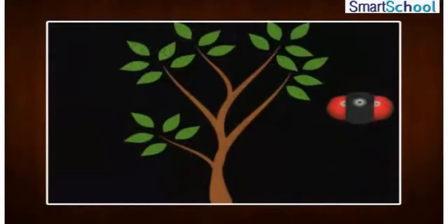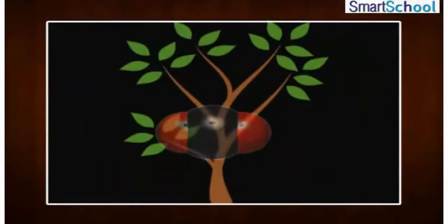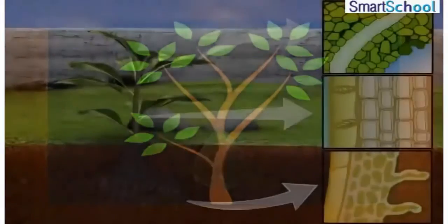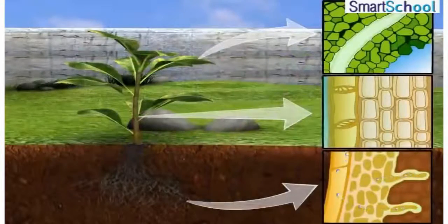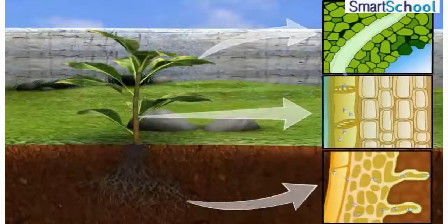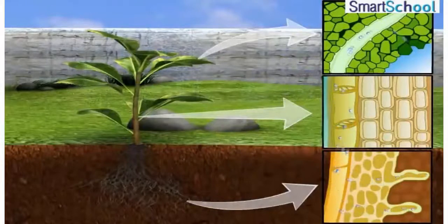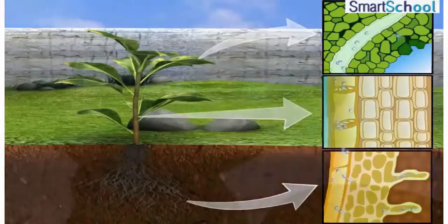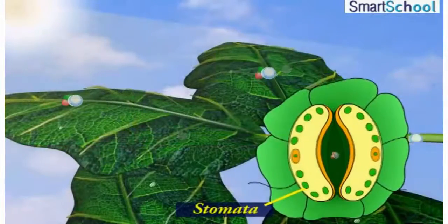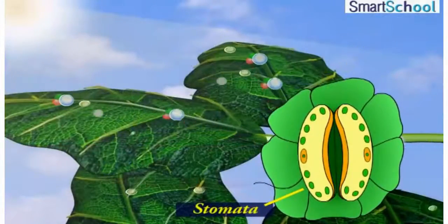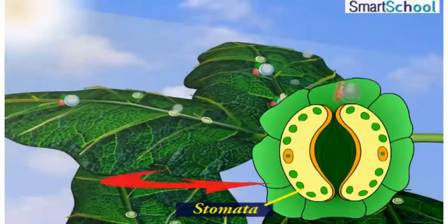The raw materials for photosynthesis are carbon dioxide and water. Water and minerals present in the soil are absorbed by the roots and transported to the leaves. Carbon dioxide from air is taken in through the tiny pores called stomata present on the surface of the leaves.